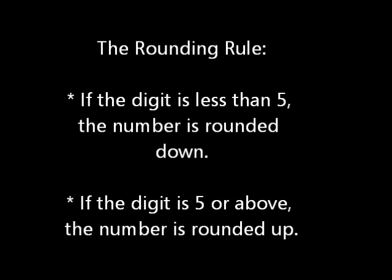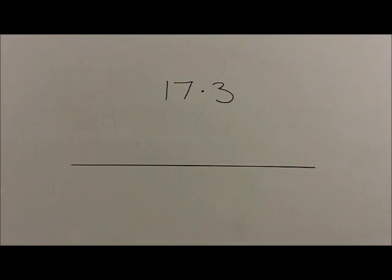Rounding is used when children are working out approximations. The rounding rules are as follows: if the digit is less than 5, the number is rounded down. If the digit is 5 or above, the number is rounded up. When rounding to the nearest unit,